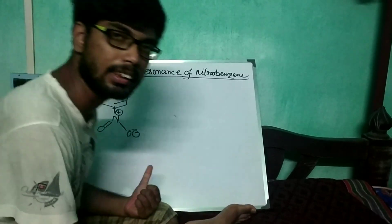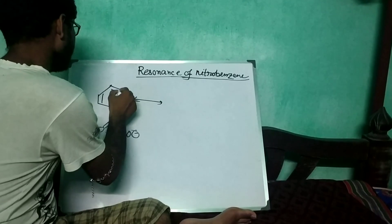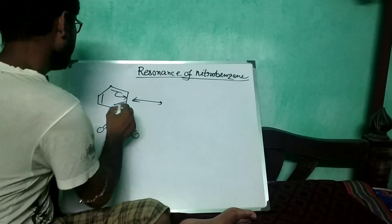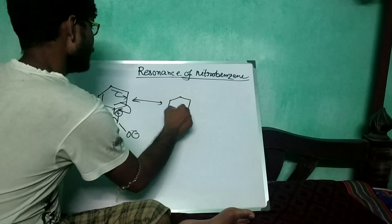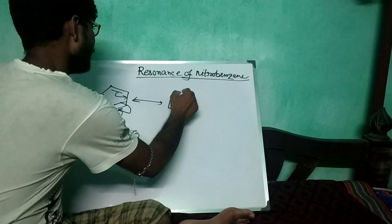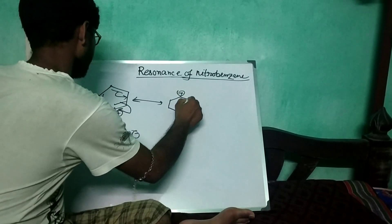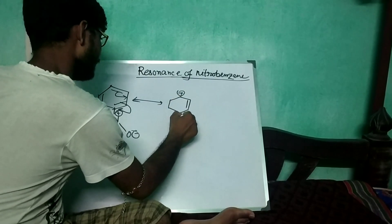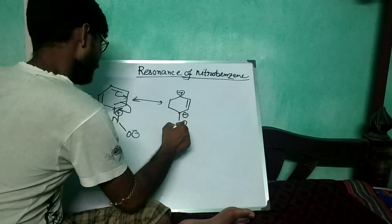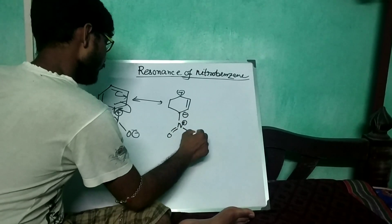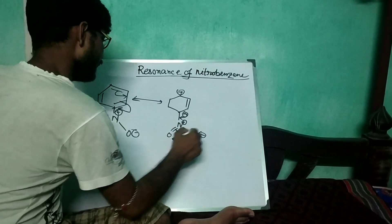Now this bond will migrate in this position, and this bond will go to this carbon atom. So the structure becomes like that — here will be a positive charge as the bond migrates here, and that is O-minus, N-plus, O double bond, and O-minus. The negative charge is here and the O becomes here.